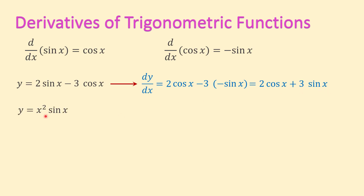Another example: y equals x squared times sine of x. Because this function is the product of two functions — x squared and sine of x — we have to use the product rule to find the derivative.